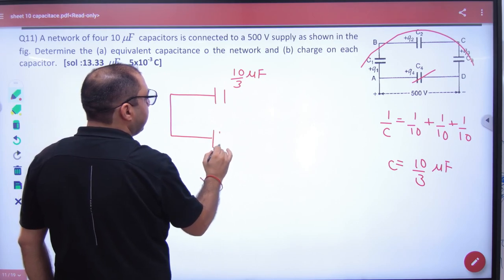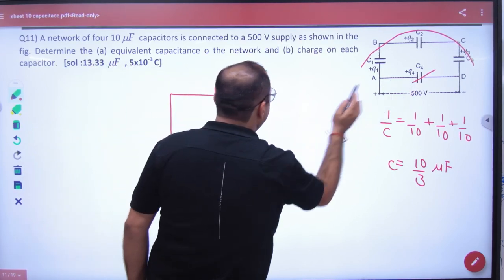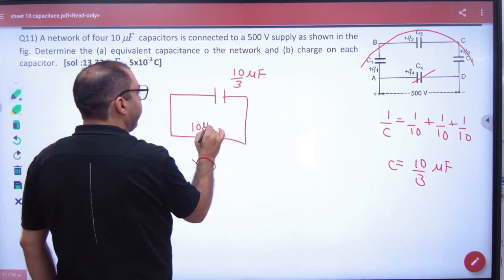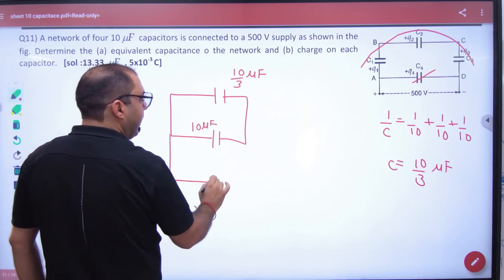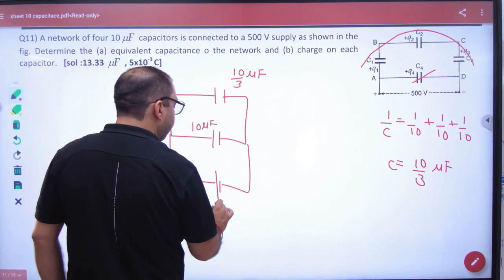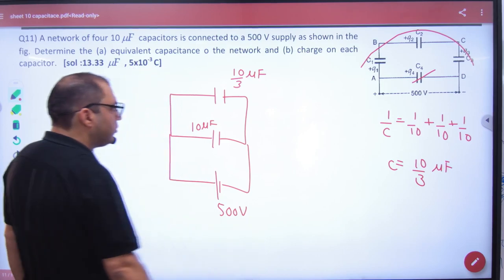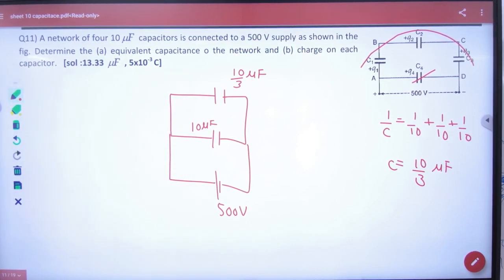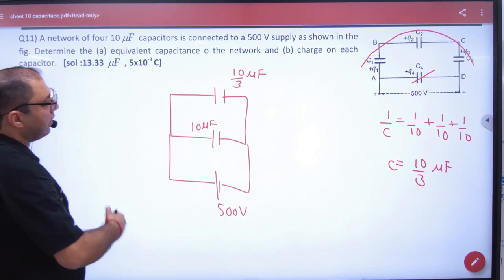And finally, a capacitor is another capacitor which value is 10 microfarad. And below, a battery is 500 volts. So, what are the points clear here? This diagram is done. Now, what do we need to do?